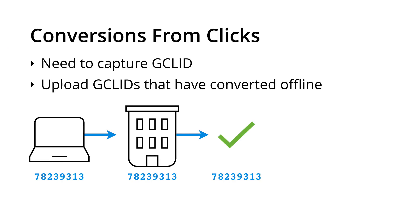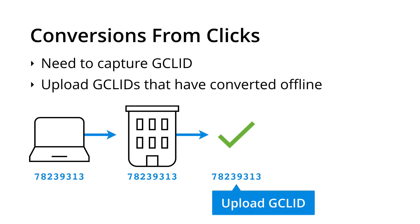Here's an example of how we could use this for offline conversion tracking. Let's say we're a car dealership offering test drives. As people click through on our ads, we capture the GCL ID in our booking form. When they come into the dealership and test drive the car, we can find the GCL ID for the people who decide to purchase and upload these IDs, allowing us to see the offline transactions inside Google AdWords.